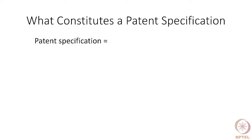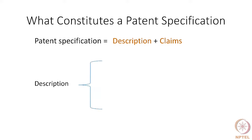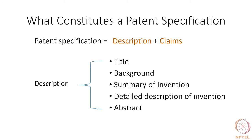The patent specification includes the description and the claims. The descriptive part along with the claims is what we refer to as the patent specification. The description itself has many parts: it has a title, a background, a summary, a detailed description, an abstract, and drawings also become part of the detailed description. The title has a statutory requirement. Background and summary are regarded as part of the descriptive part.